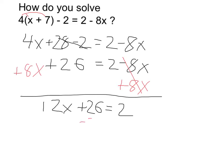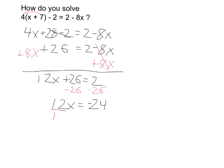I can subtract 26 on both sides, which gives me 12x equals negative 24. And finally, to get x alone, I can divide both sides by 12. 12 goes into 24 twice, so into negative 24 would be negative 2 times, and x therefore is negative 2.